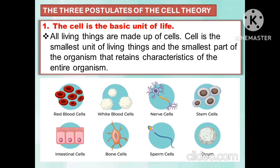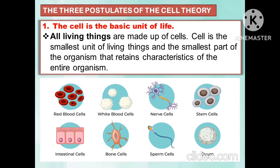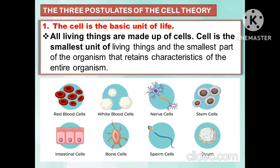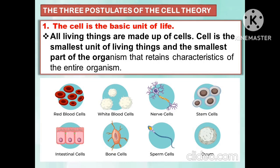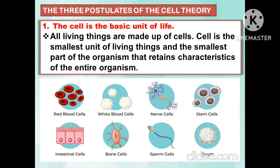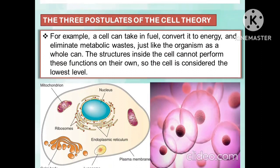The following are the three postulates of the cell theory. The first one is that the cell is the basic unit of life. All living things are made up of cells. The cell is the smallest unit of living things and the smallest part of the organism that retains characteristics of the entire organism.